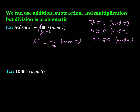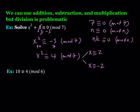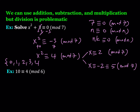We can add 7 to both sides, and since 7 is congruent to 0 mod 7, we add 0 on the left-hand side, giving x squared is congruent to 4 mod 7. Now 4 is a perfect square, so x is congruent to either 2 or negative 2 mod 7. Since negative 2 is congruent to 5 mod 7, the equation has two solutions: 2 and 5. In mod 7, the finite set of values is 0, 1, 2, 3, 4, 5, and 6 — all possible remainders upon division by 7.